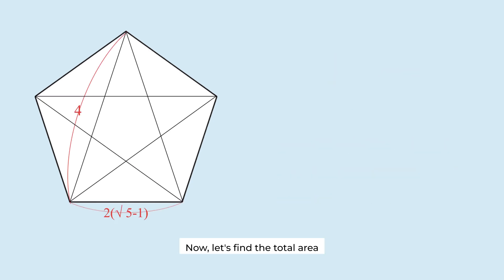Now, let's find the total area of the 5 triangles. All these triangles are congruent. So we'll calculate the area of one triangle and multiply it by 5.